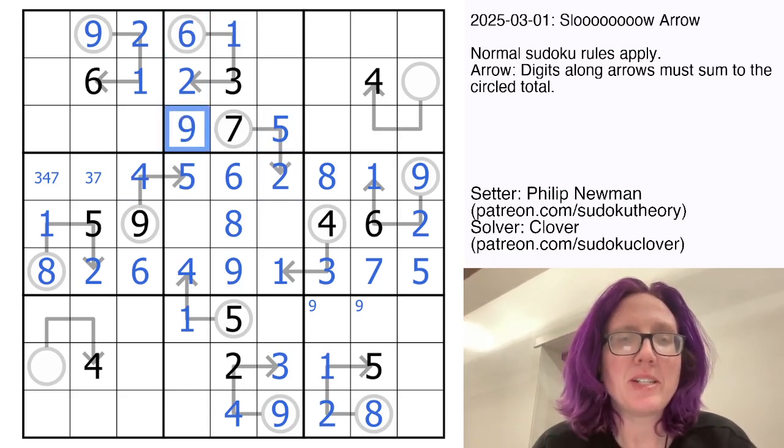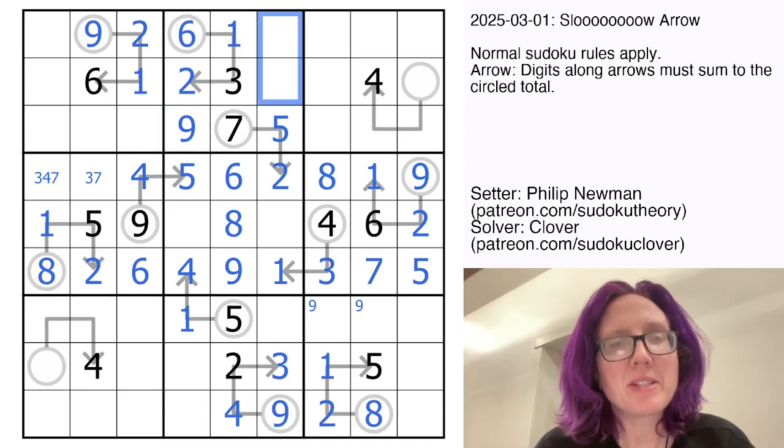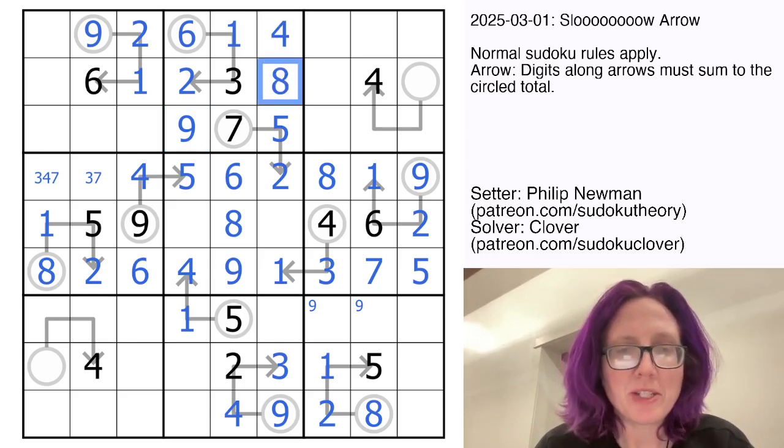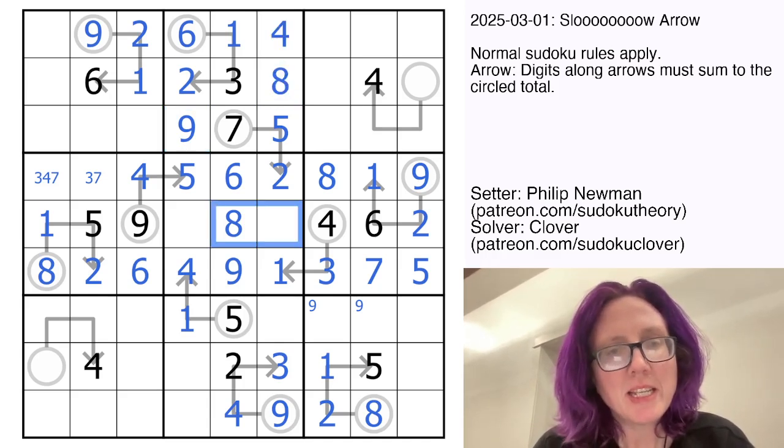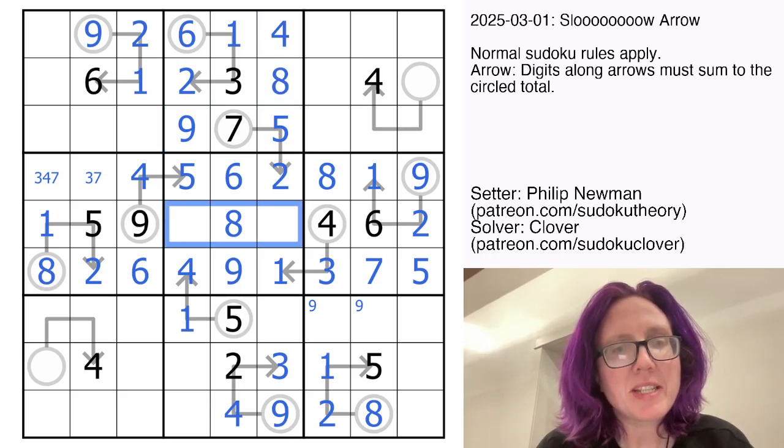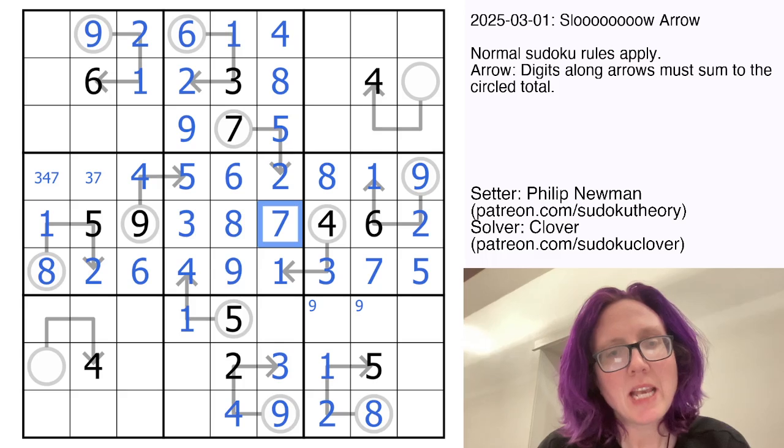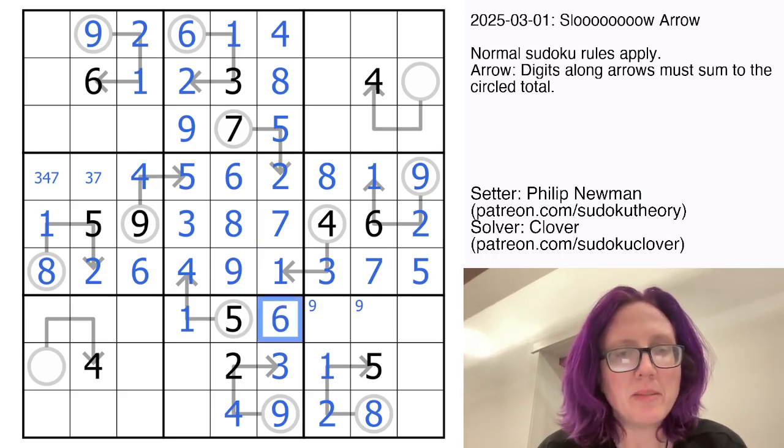And this is the only place for a nine in the region at this point, and we still need a four and an eight, which we can place right now. Here we're going to need a three and a seven to finish this region, and a six to finish the column, and a seven and an eight to finish this region.